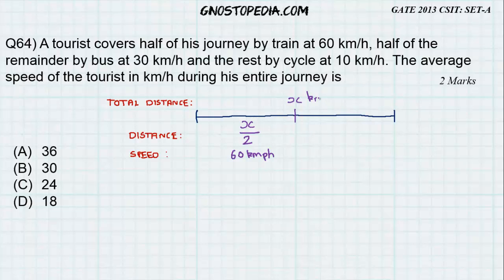x is in kilometers, x by 2 also will be in kilometers. Next it specifies half of the remainder. Half of the remainder means the remainder is already x by 2. Hence half of the remainder will be x by 4 kilometers at 30 km per hour.